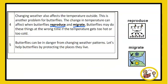Changing weather also affects the temperature outside. This is another problem for butterflies. The change in temperature can affect when butterflies reproduce and migrate. Butterflies may do these things at the wrong time if the temperature gets too hot or too cold. Butterflies can be in danger from changing weather patterns. Let's help butterflies by protecting the places they live.